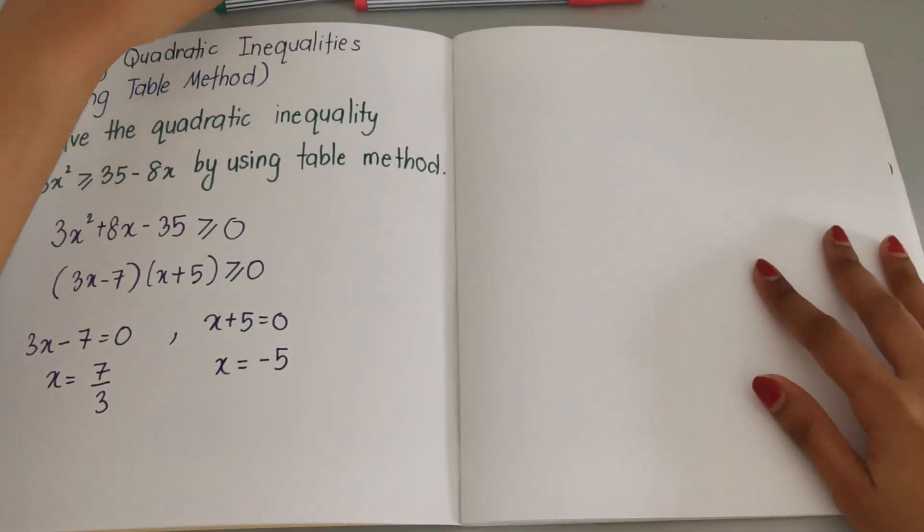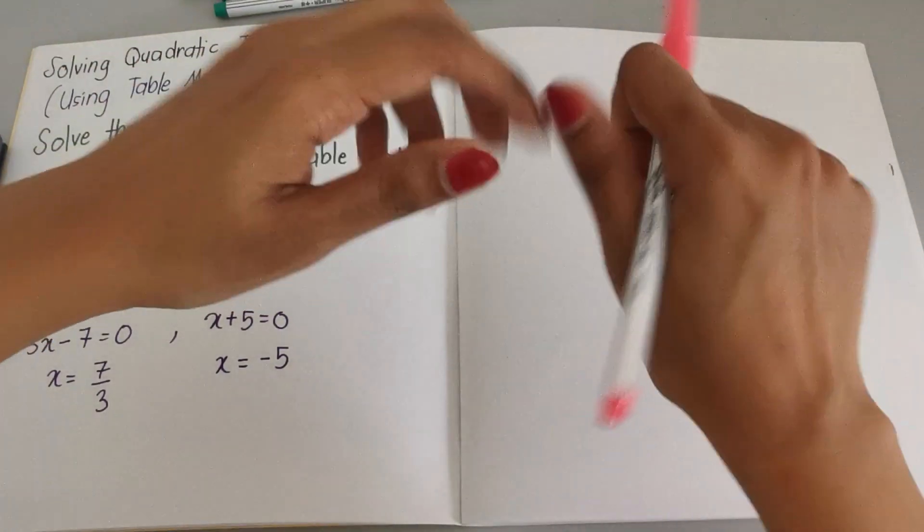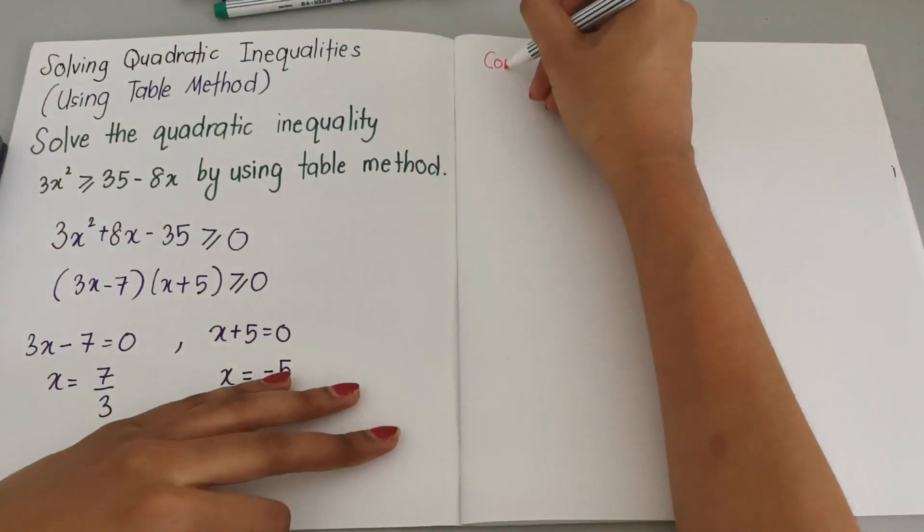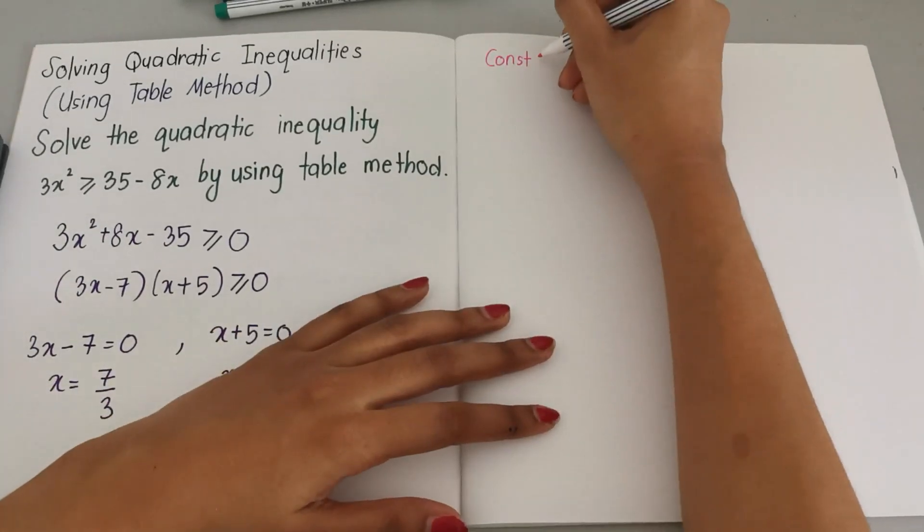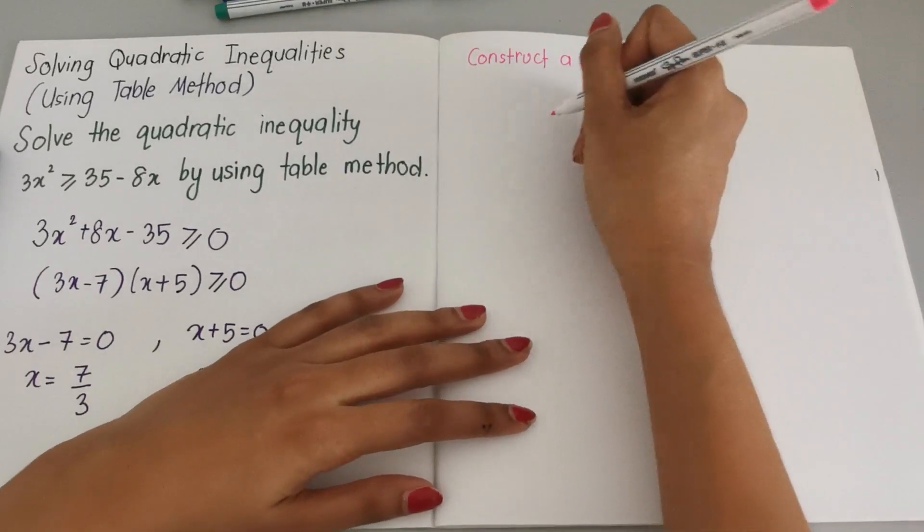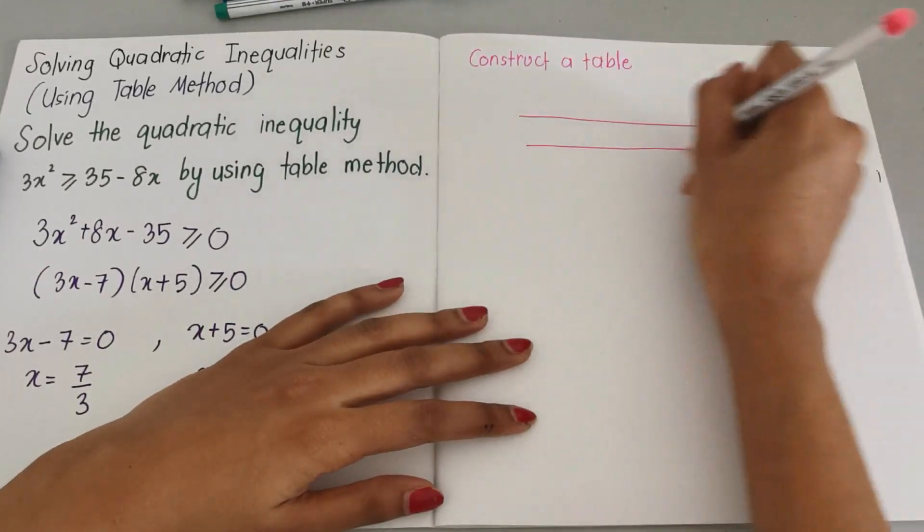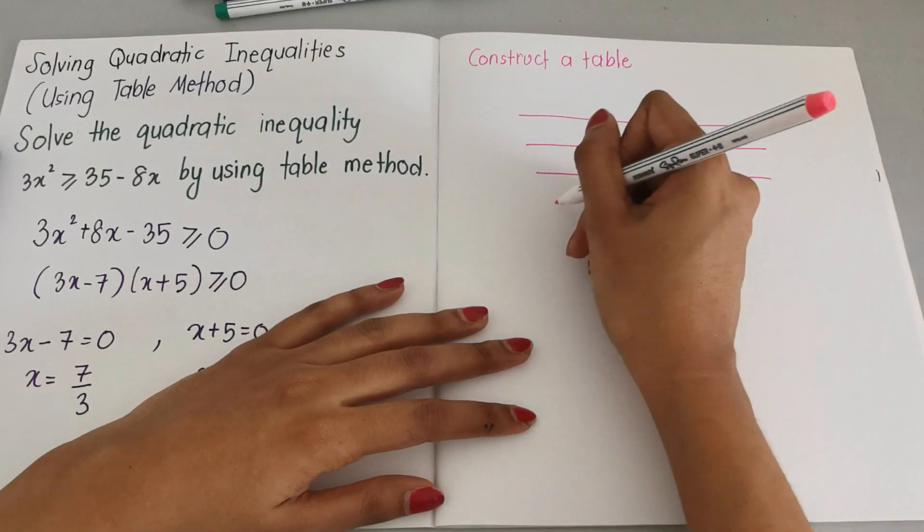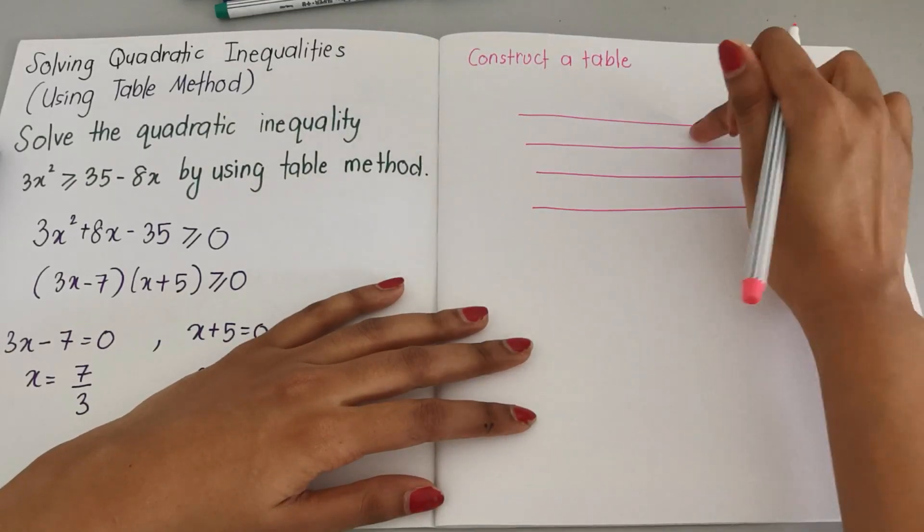Now to use table method we need to construct a table, so let's construct the table over here. The table is going to be like this: create 3 rows.